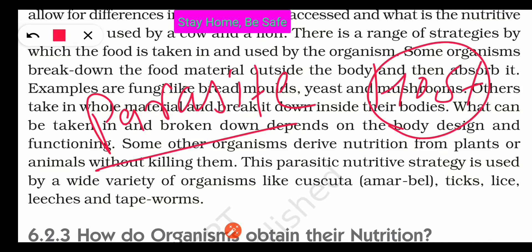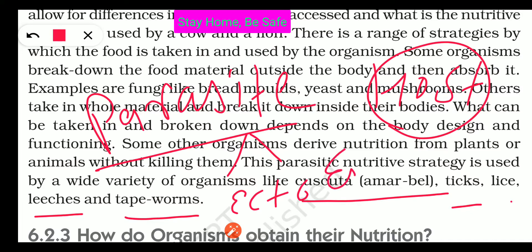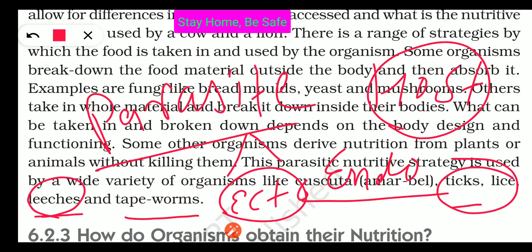The type of organism called a parasite lives inside or on the body of a host. Examples include ticks, lice, leeches, tapeworms, and Taenia solium. We can divide them into two categories: ectoparasites, which take nutrients from outside the body like ticks, lice, and leeches; and endoparasites, which live inside the body like tapeworms and worms. The organism that is the host is not killed, but it is harmed.